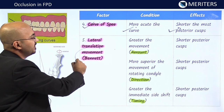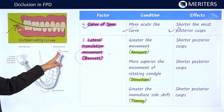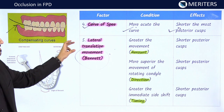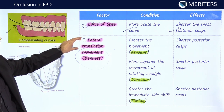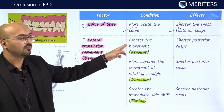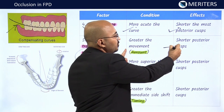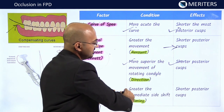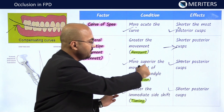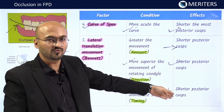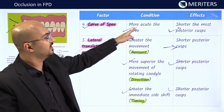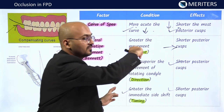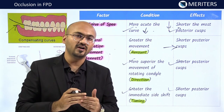The final vertical determinant is Bennett movement — the lateral translation movement of the condyles. You have a rotating side and an orbiting side. Greater the movement on the working side, the shorter the cusp tip. More superior the movement, shorter the posterior cusp tips. Greater the side shift, the shorter the cusp tips. So if Bennett movement is greater, cusp tips should be shorter. If the curve of Spee is more acute, cusp tips will also be smaller.